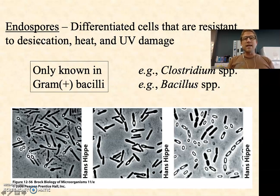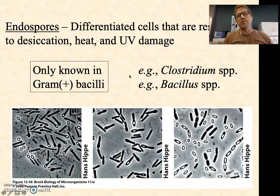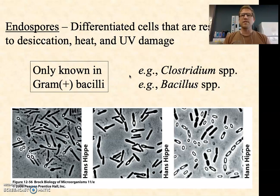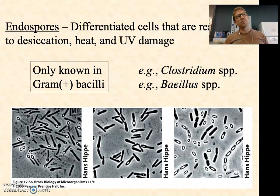They're resistant to desiccation — fancy word for drying out — heat, and UV damage. In other words, anytime bacteria that can form endospores are exposed to the sun where they're going to be drying out, getting too hot, or exposed to a lot of UV, they're going to sporulate as a way to survive. When you're thinking about endospores, I want you thinking gram-positive bacilli — rod-shaped gram-positive bacteria. Among the bacteria that form endospores and cause disease, two genera that are really important are Clostridium species and Bacillus species. Both of these can be found in soil and water.